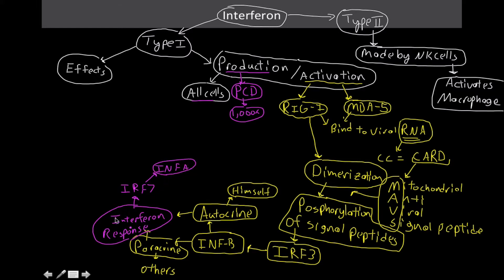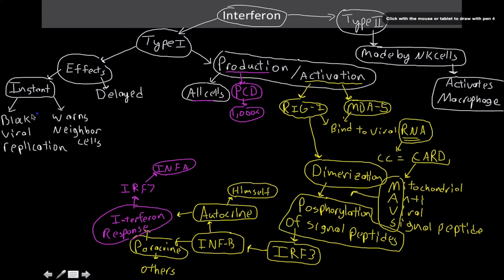So let's talk about what the interferon response also entails. So I said for type 1 interferon that there are effects. And the two types of effects that I'm going to talk about, which are the interferon response itself, would be the immediate effects and the delayed effects. For the immediate effects, there's two. This is going to result in things that are going to interfere with viral replication, and then warning other cells nearby to start producing more interferon on their own. I'm going to color coordinate these with what each one does.